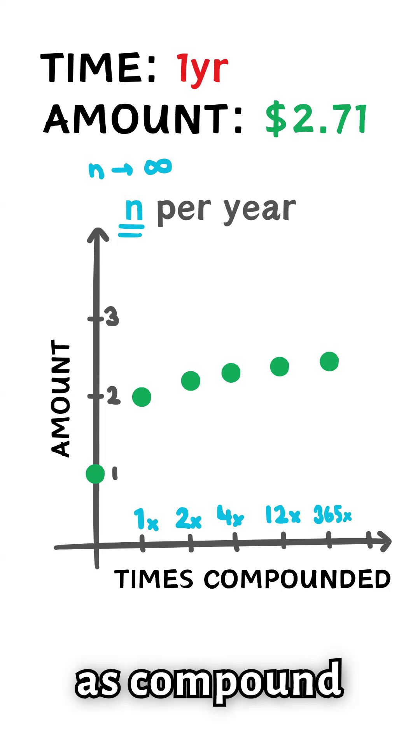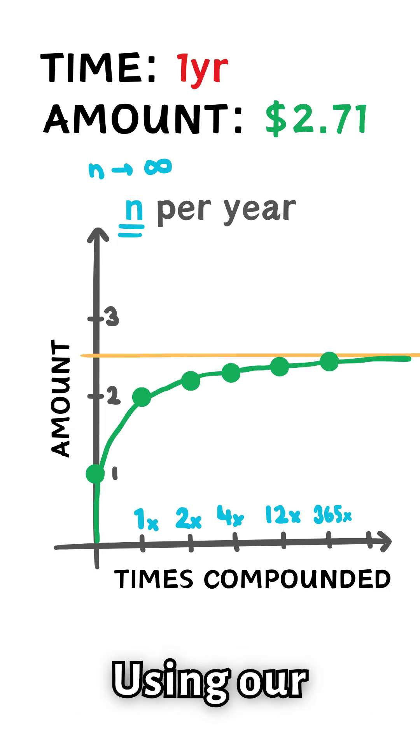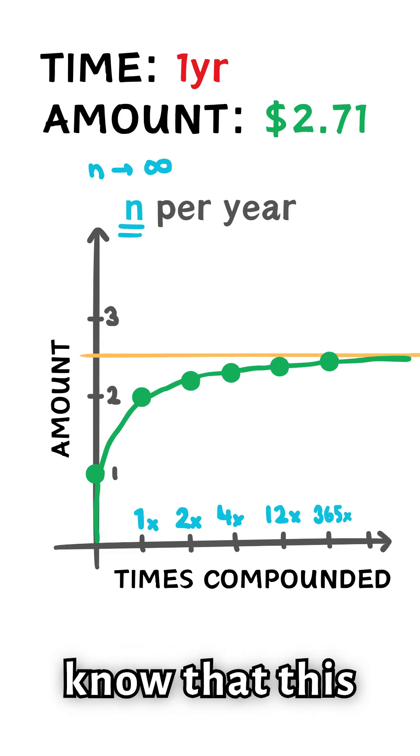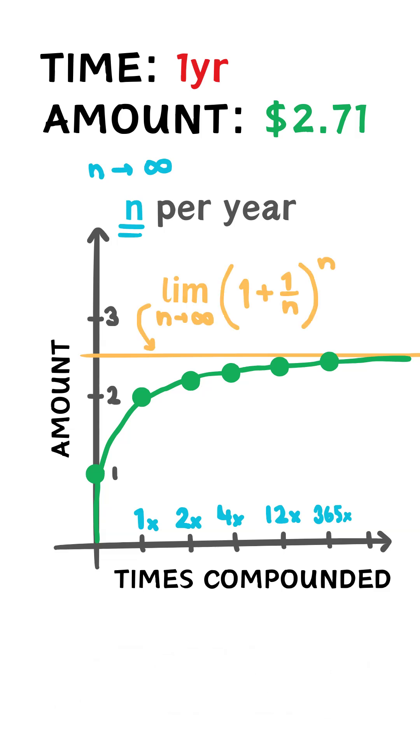Bernoulli realized that as compound interest occurs more frequently, there is a limit to the amount of money that could be made. Using our compound interest knowledge, we know that this limit could be notated as this.